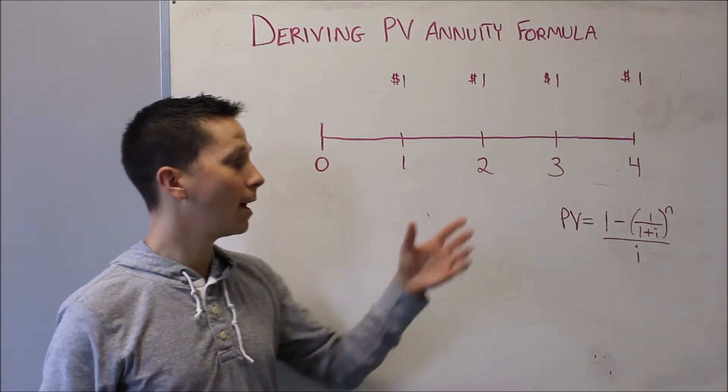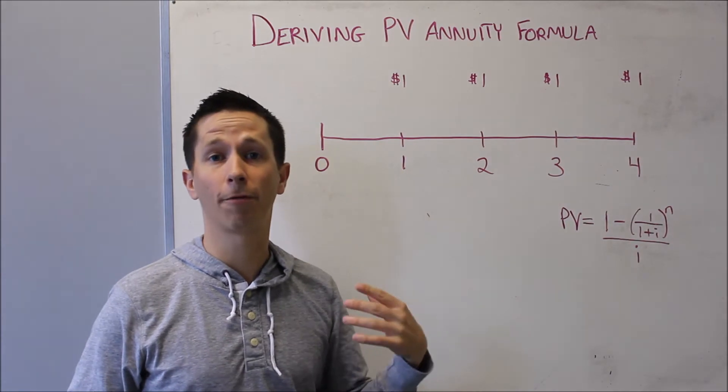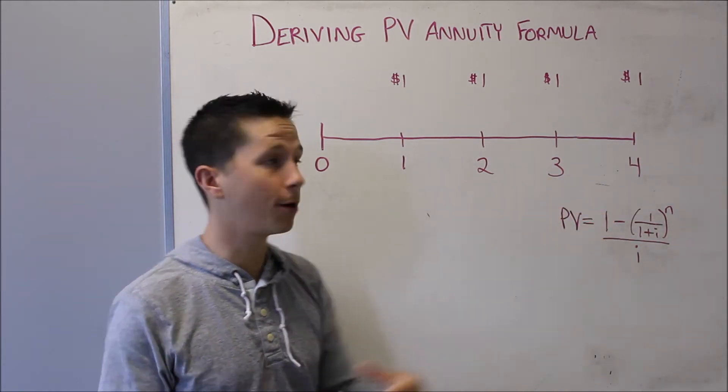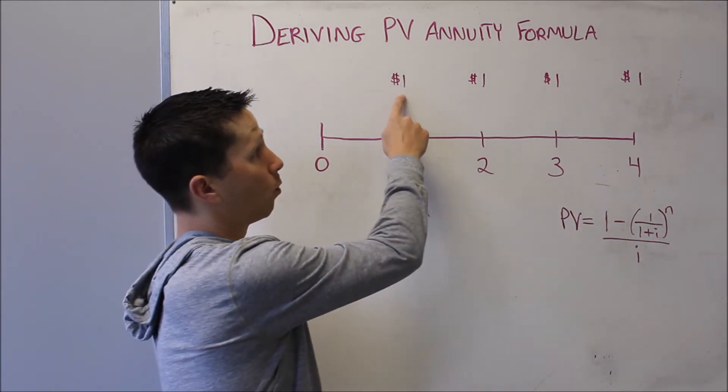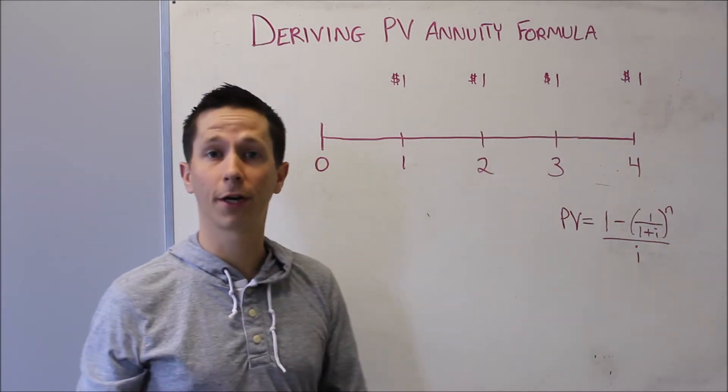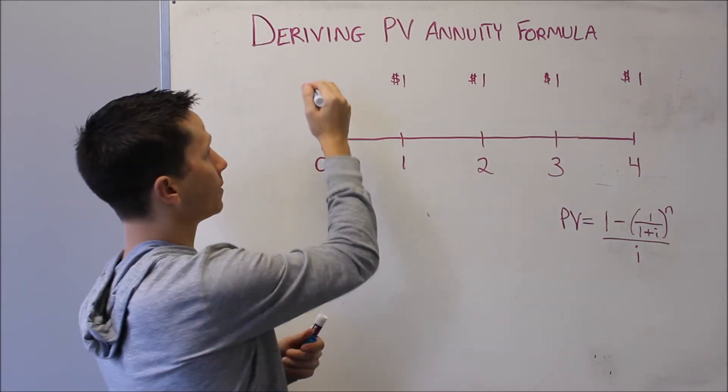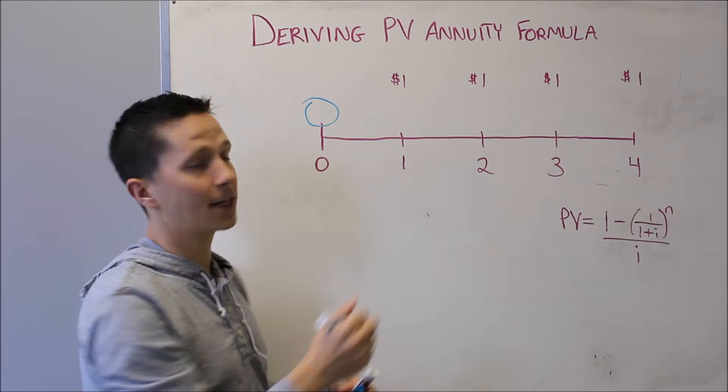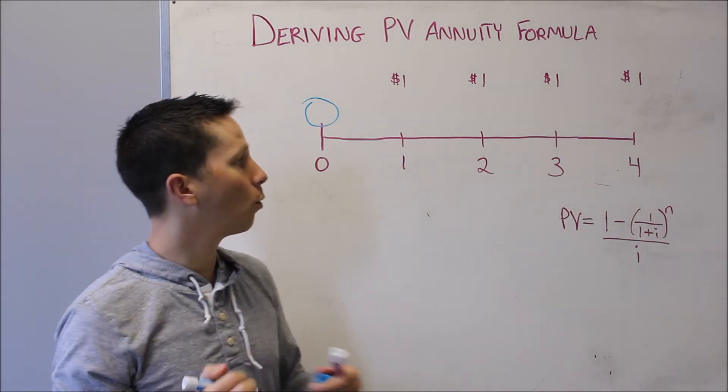I've drawn a quick timeline here, and this is also the formula, remember, for when payments are made at the end of the period. So I've shown $1 at the end of the next four years, and I want to know what the present value of these cash flows is at time zero. So what are we going to do?